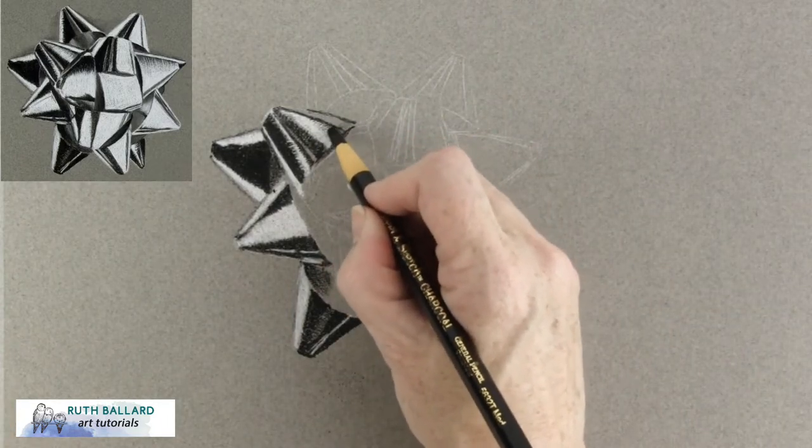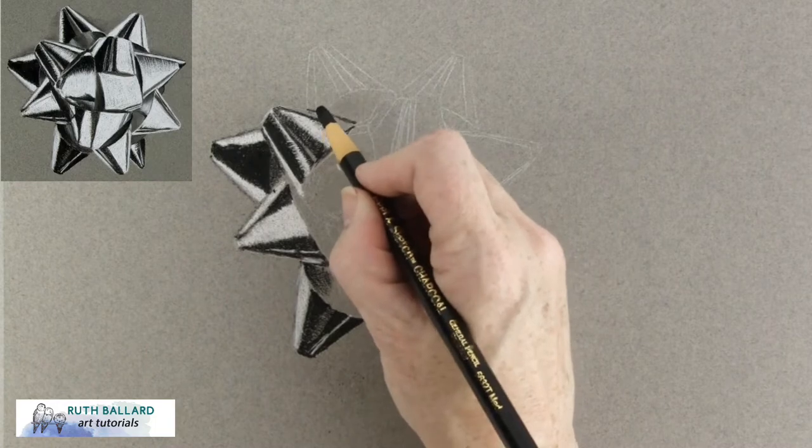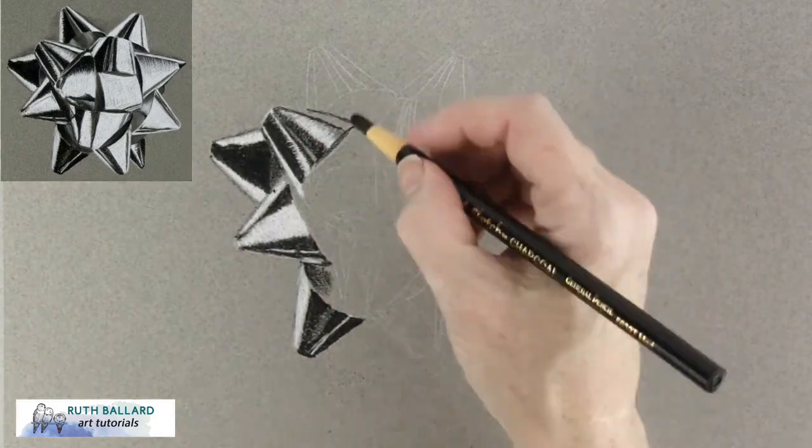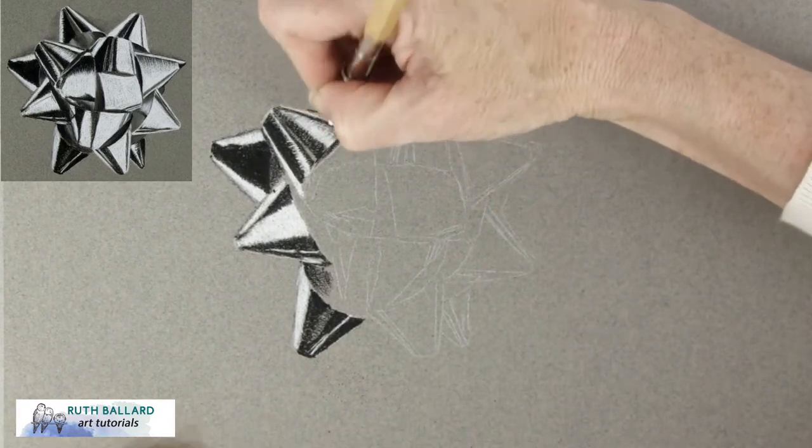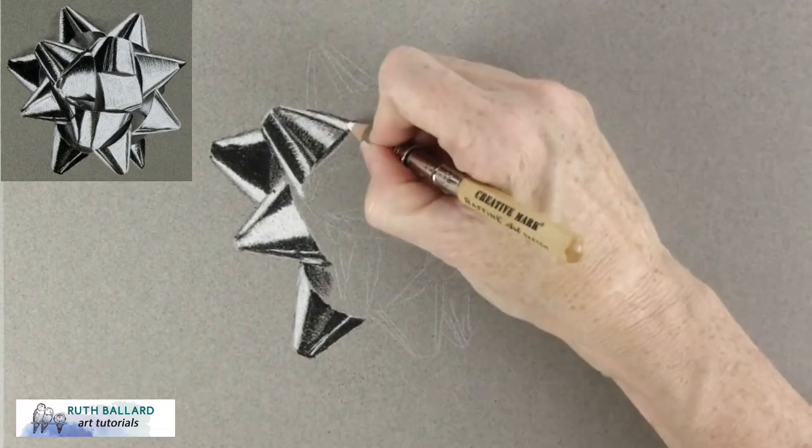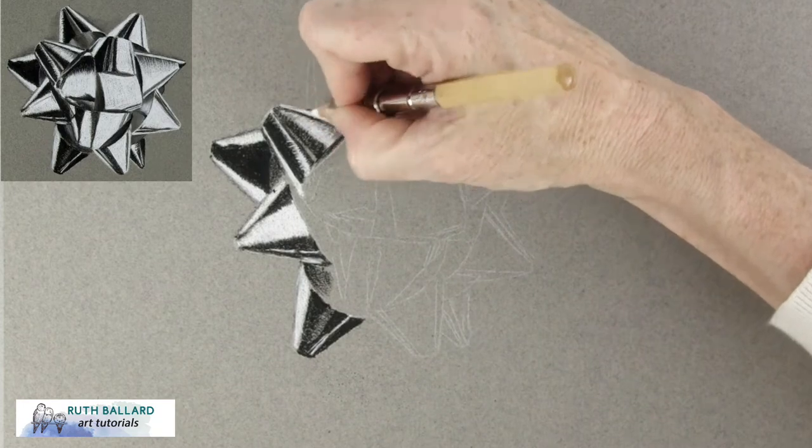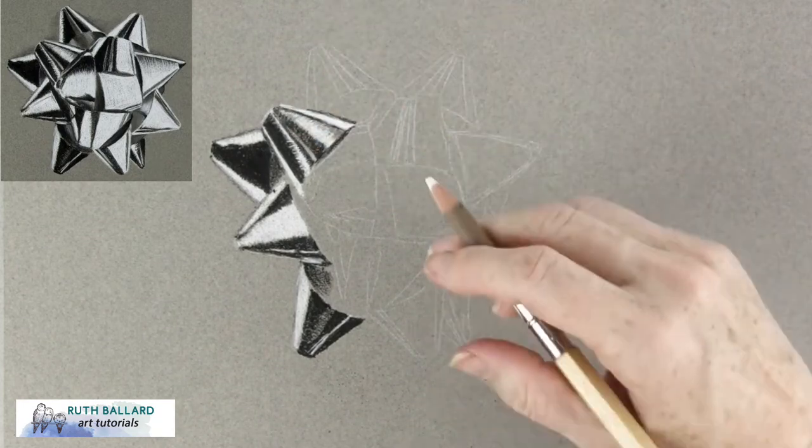It's the best way to achieve contrast and this is exactly what you want when drawing shiny objects. You can make objects shiny without using silver markers or metallic colored pencils but just by adding the right contrast.